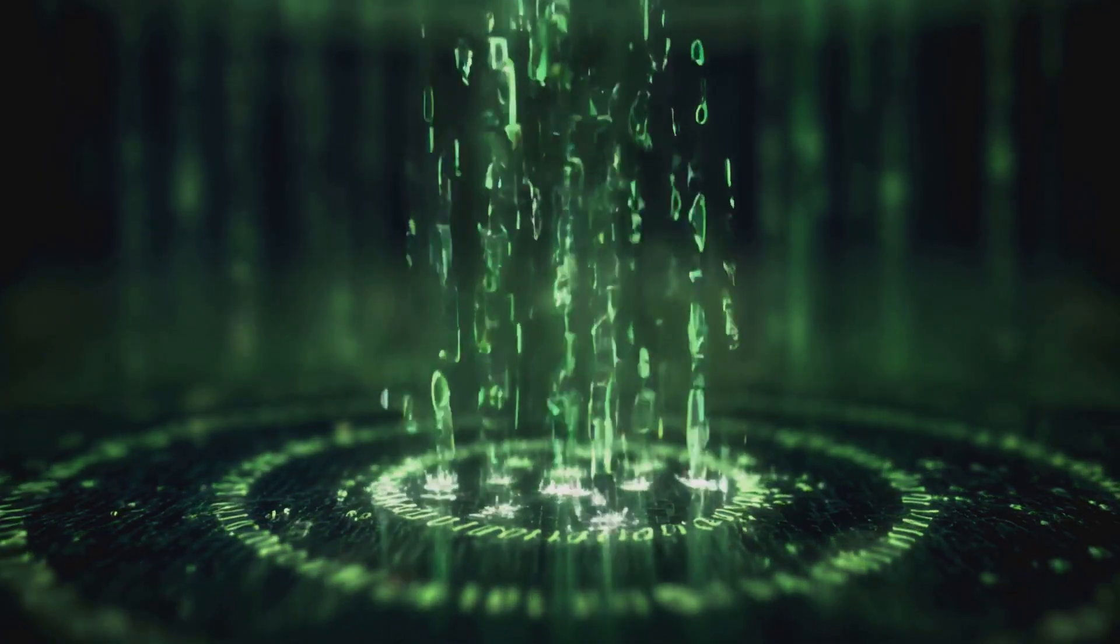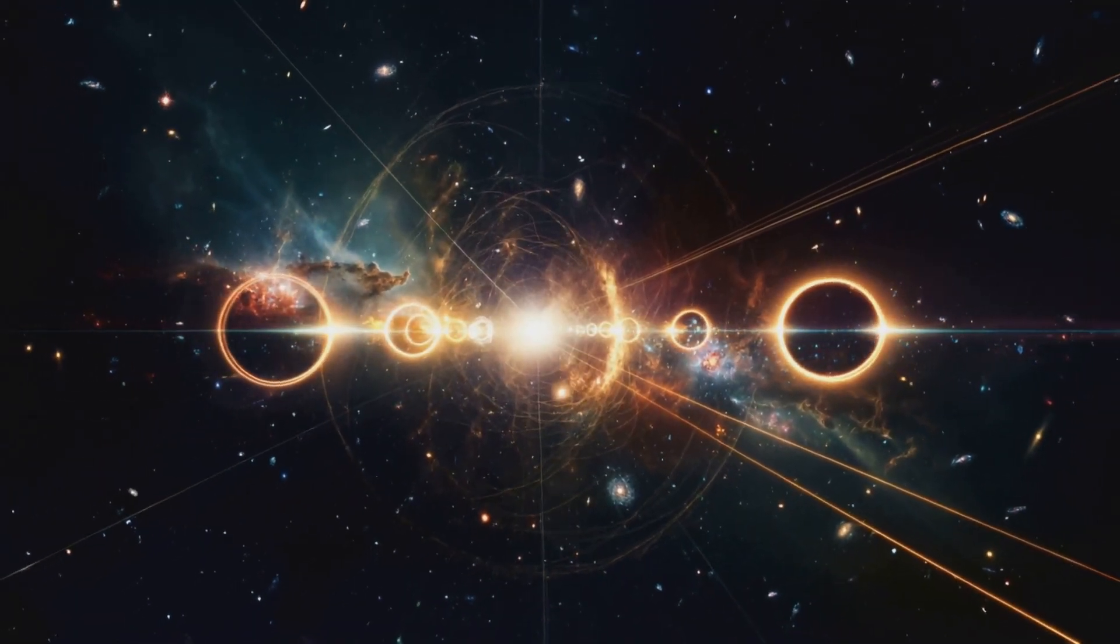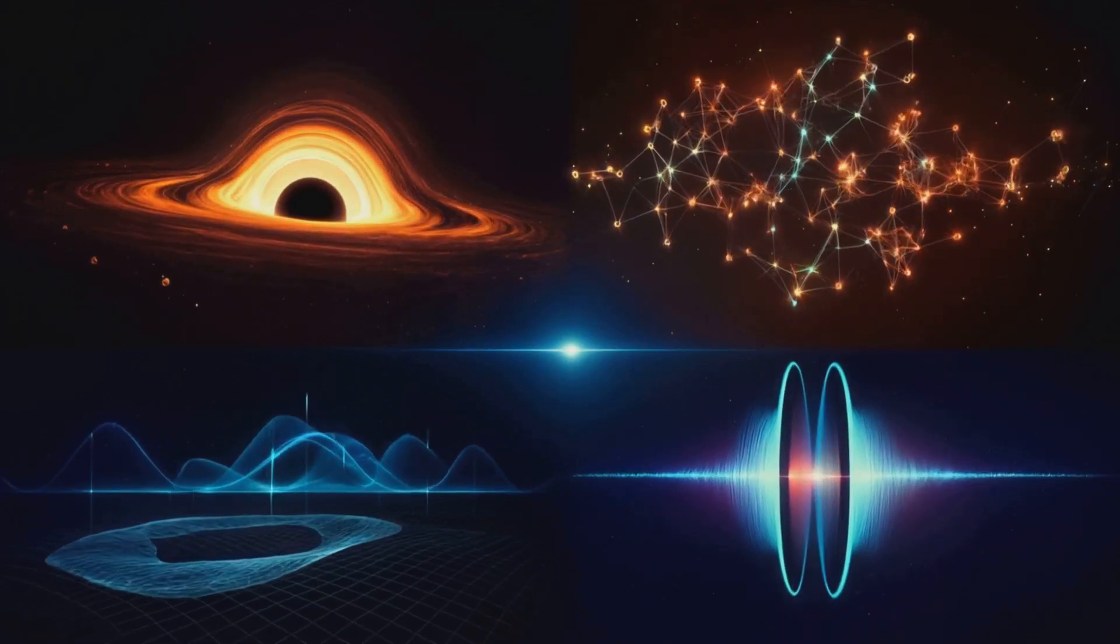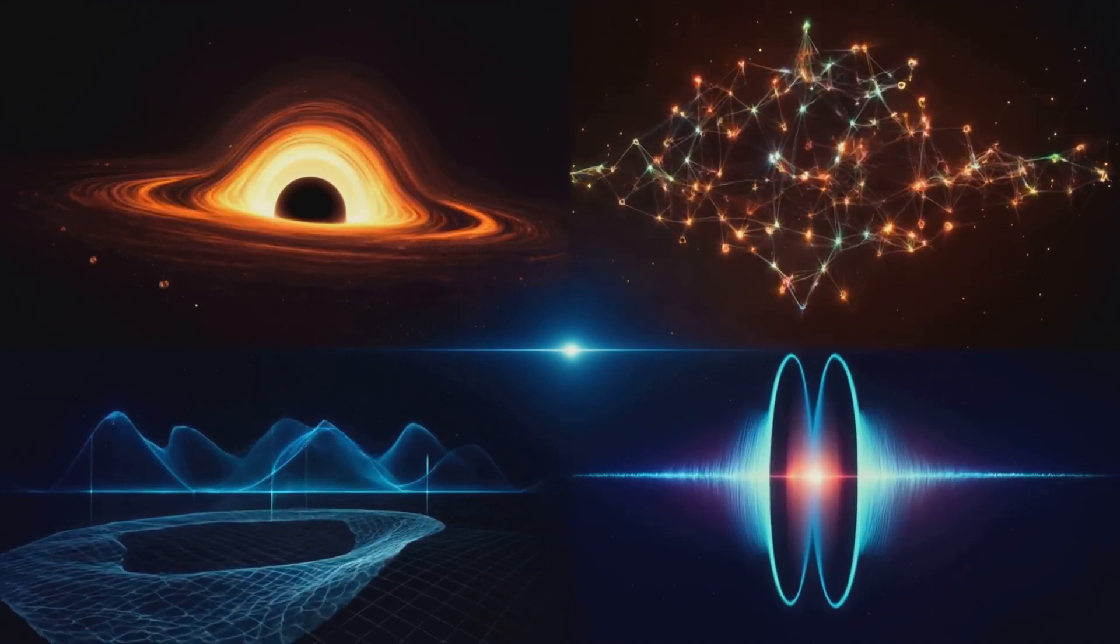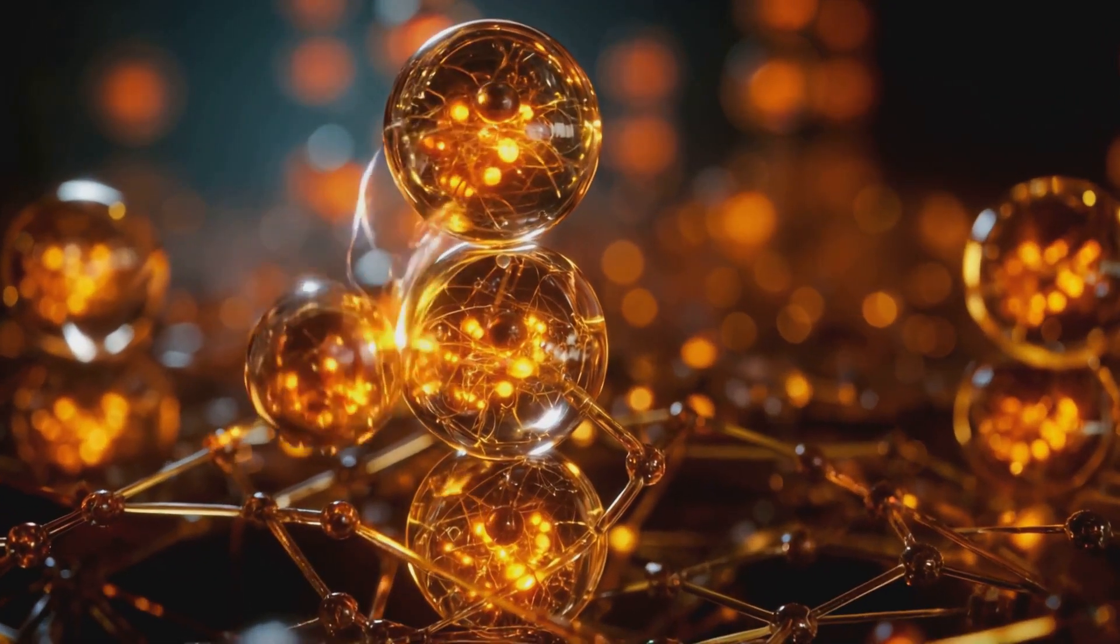Beneath everything we perceive there is a deeper layer of structure, a hidden alphabet written in the fabric of space itself. This alphabet is not made of ink and paper, nor of sounds and syllables, but of spinning cubits, tiny glowing spheres of light, each carrying a sliver of information.